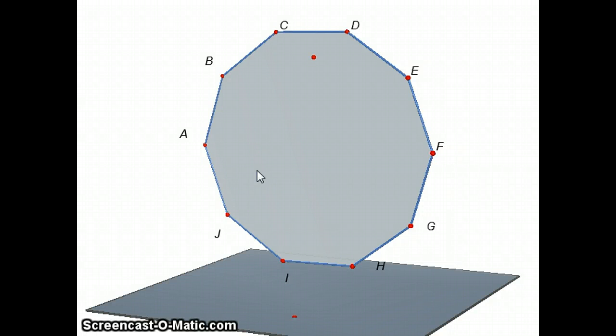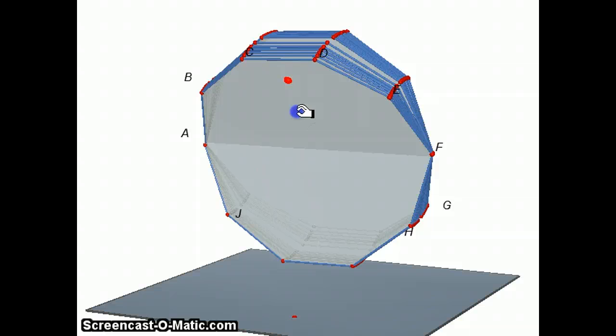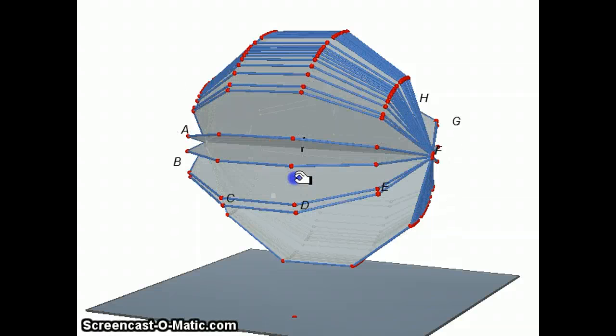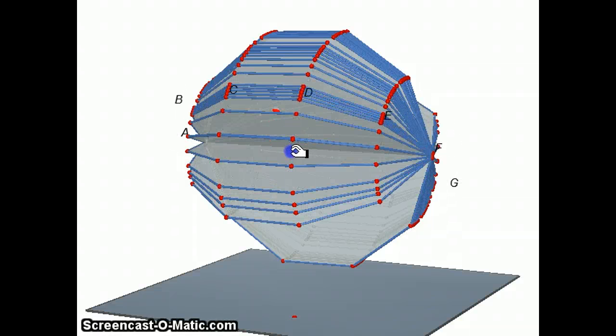Hi, this is Gary Rubenstein. This is the second part of a video of how Archimedes found that the surface area of a sphere is 4πr². As a refresher from the last tutorial, he created a regular polygon with an even number of sides. In this picture there's ten sides. And if you rotate this around line AF, you see what happens is that you get a figure that looks kind of like a sphere.